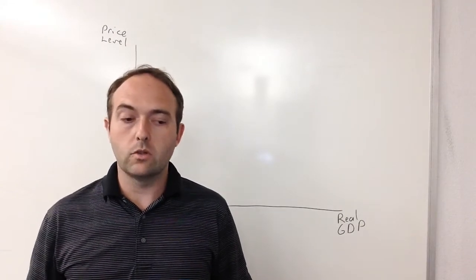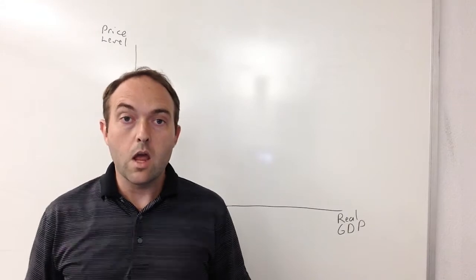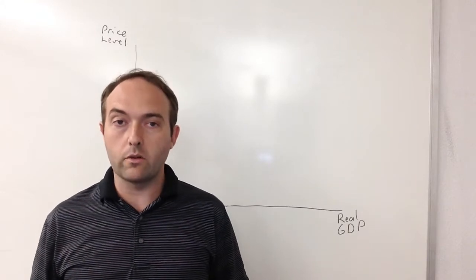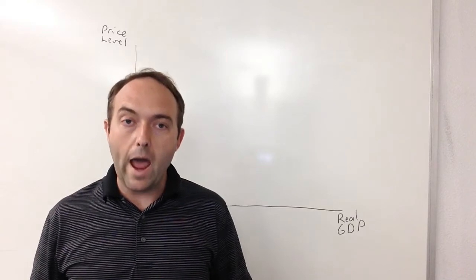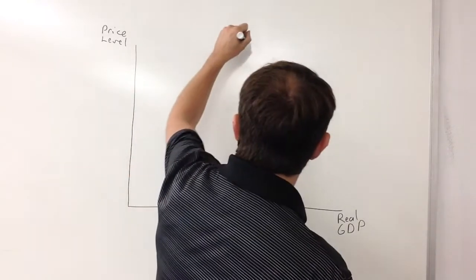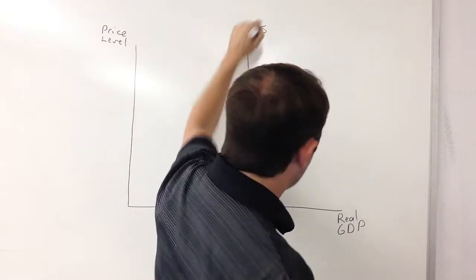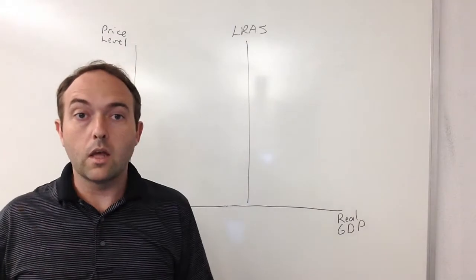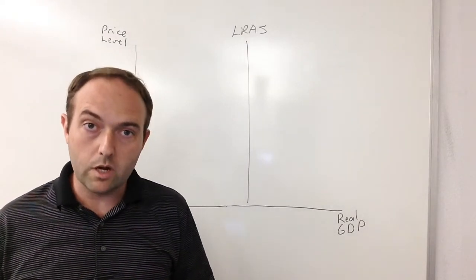Now, when it comes to actually putting some data on this chart, first thing we want to look at is our potential to produce products in this country. What in your graph is going to be called a long-run aggregate supply. That's going to be a vertical line, LRAS, and again, what that number tells us is our potential for production.